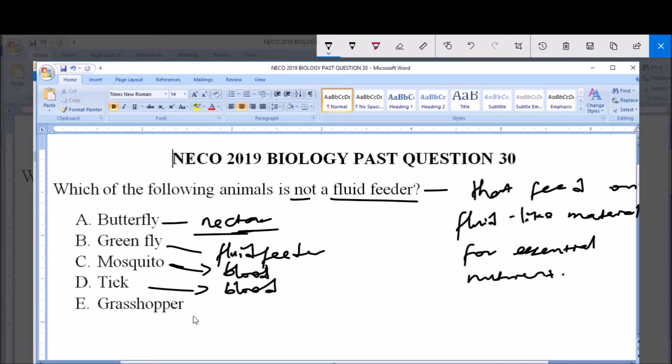Now, option E says grasshopper. Grasshopper is not a fluid feeder because grasshopper feeds on the leaves of plants.